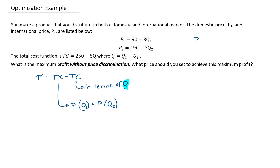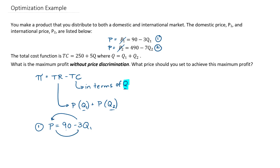Starting with a clean slate, we have a general price P with no price discrimination, so P1 and P2 can both be written as P. Treating the first demand equation as equation 1: P is equal to 90 minus 3Q1. I'm going to manipulate this to get Q1 in terms of P. Adding 3Q1 to both sides and subtracting P gives 3Q1 is equal to 90 minus P. Dividing both sides by 3: Q1 equals 30 minus P over 3.